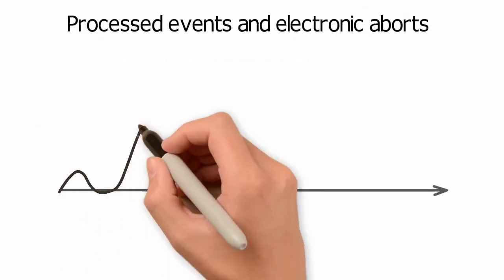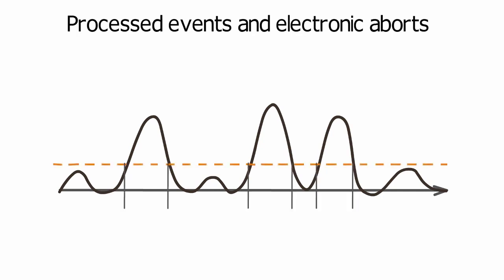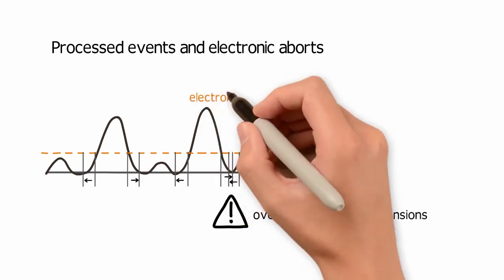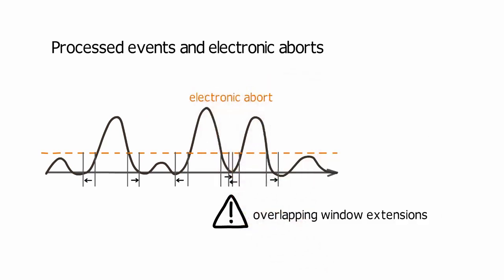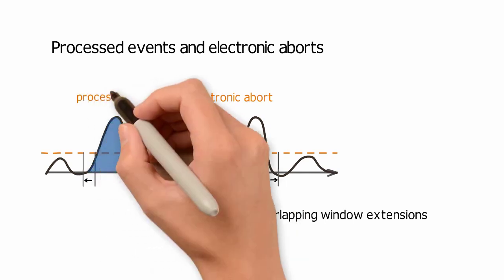When running sample at a high event rate, the cells might arrive at the laser very close to each other. If two pulses are close enough that the window extensions overlap, those signals cannot be processed and both are discarded as an electronic abort. Voltage pulses that are well separated from neighboring pulses will result in a processed event.